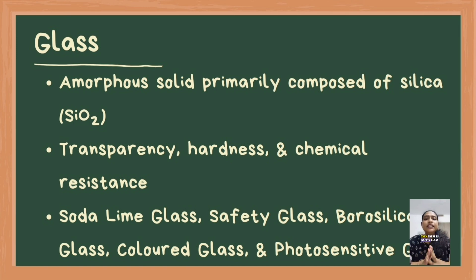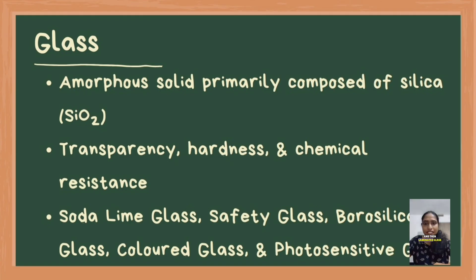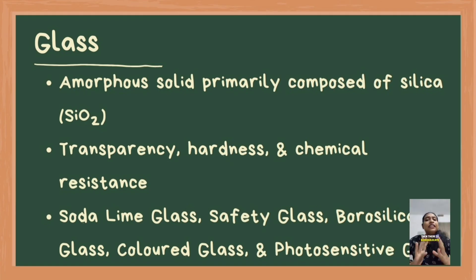Safety glass is a type of glass designed to minimize the risk of injury. It includes subtypes like tempered glass, which is stronger and shatters into small less dangerous pieces, and laminated glass, which holds together when broken due to a plastic interlayer.